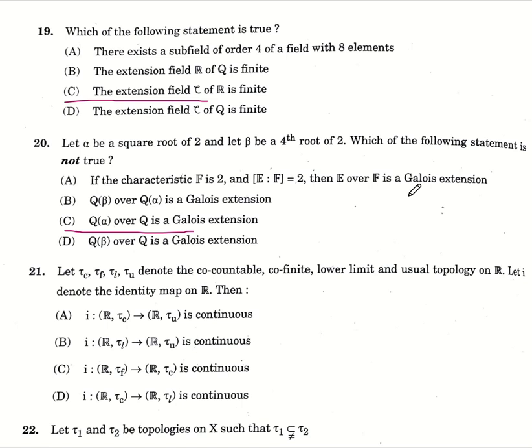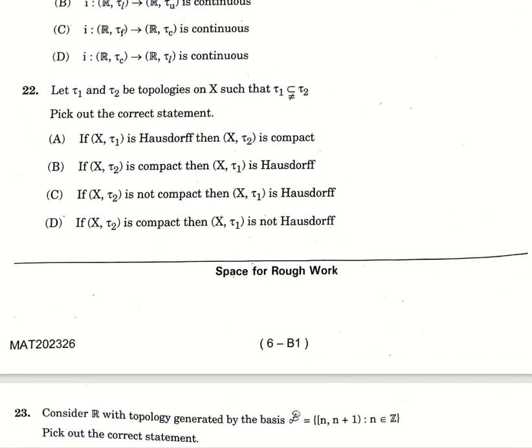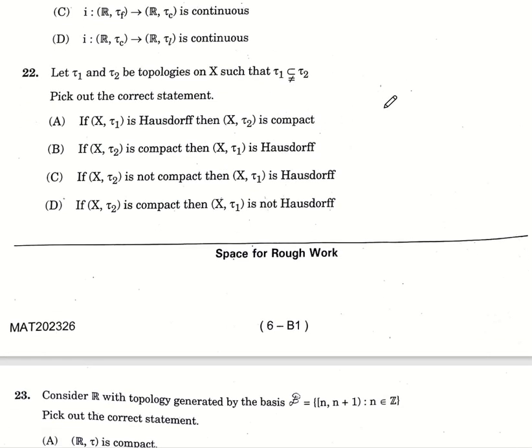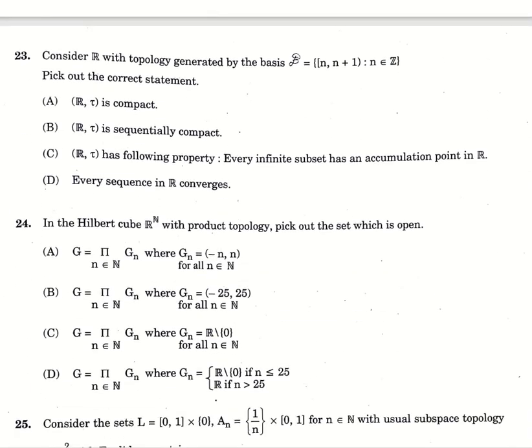Twenty-first, let tau C, tau F, tau L, tau U denote co-countable, co-finite, lower limit, unusual topology on R. Let I denote identity map. Then option number A, I is a function from R tau C to R tau U is continuous. Twenty-second, tau 1, tau 2 be topologies on X. Tau 1 is a subset of 2 and it is not equal to tau 2. Pick out the correct statement, option number D. If X tau 2 is compact, then X tau 1 is not Hausdorff. Twenty-third, consider R with topology generated by the given basis. The correct statement here is option number D, every sequence in R converges.